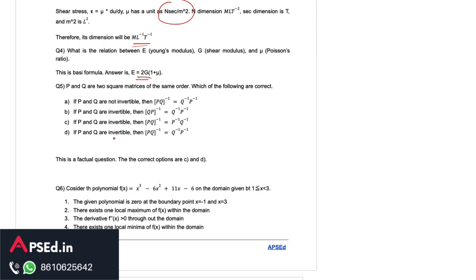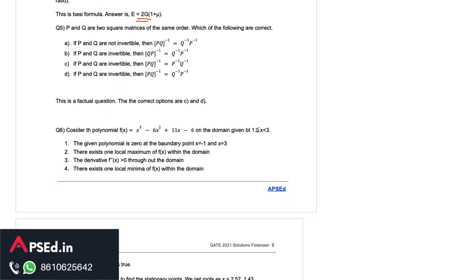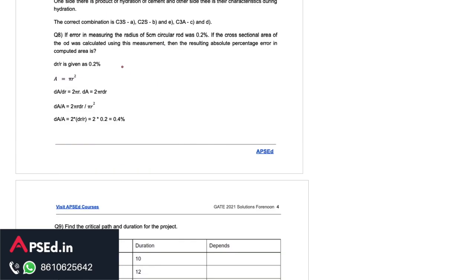Then from maths, this is also a factual question, then maximum minima related question. We can see this one here it says if error in measuring the radius of 5 centimeter circular rod was 0.2 percent and the cross sectional area of the rod is calculated then the percentage error in the computed area will be. They have given the radius and the error in radius. So 0.2 percent error is there that means the term dr upon r this is 0.2 percent and we have to find the error in area.